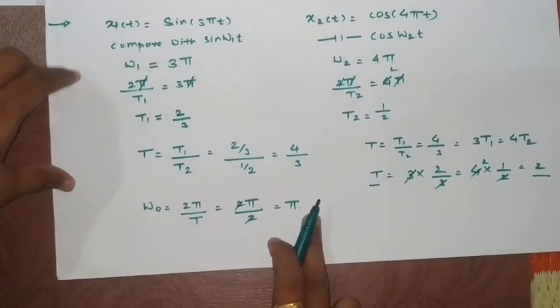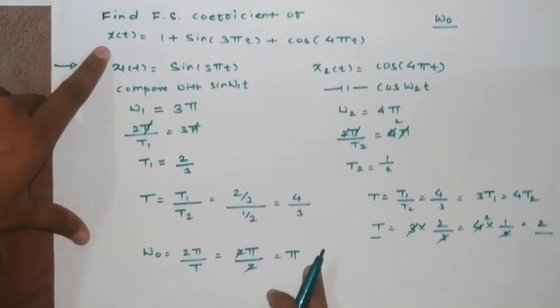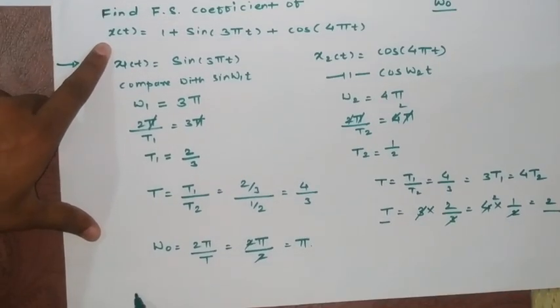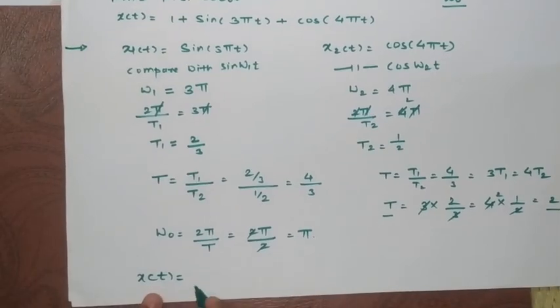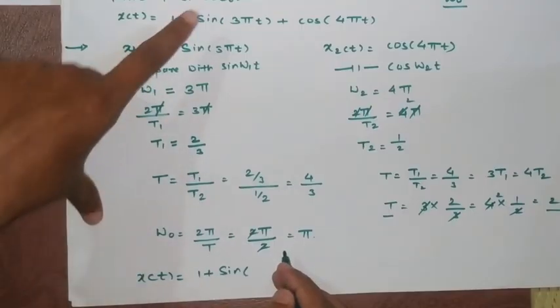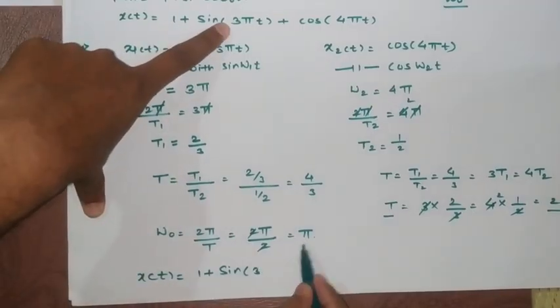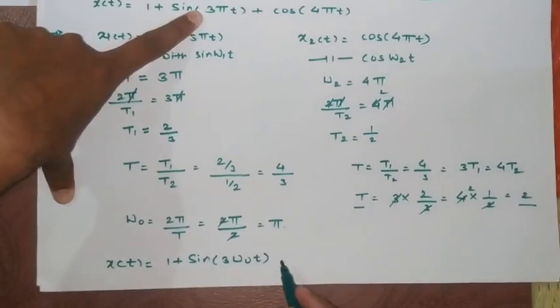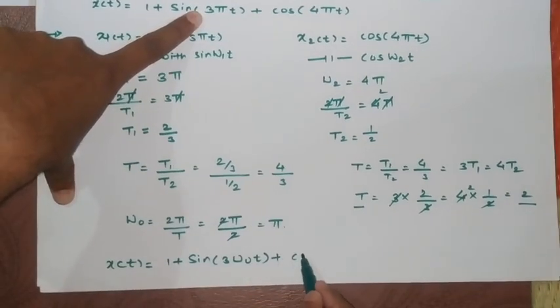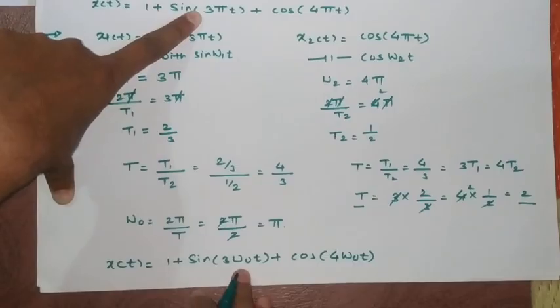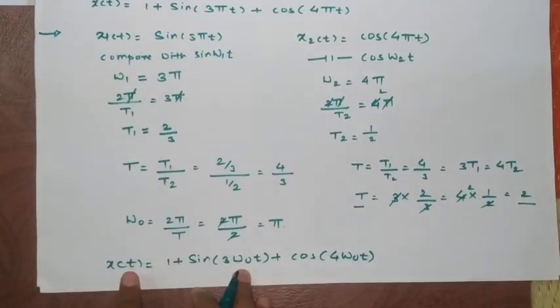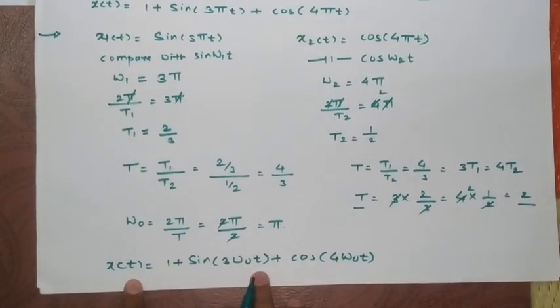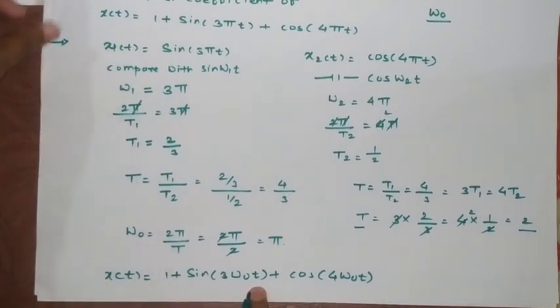Here we got ω0 equals π. So based on that I can get this term as x(t) equals 1 plus sine of this 3 as it is and instead of π we can put this value as ω0 t. Similarly plus cos 4ω0 t. So this is the standard form of representing signal in terms of its frequency component.